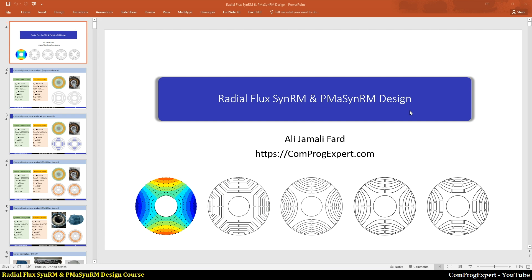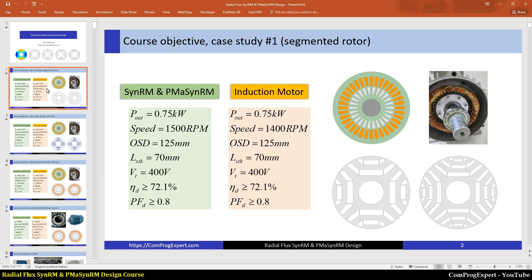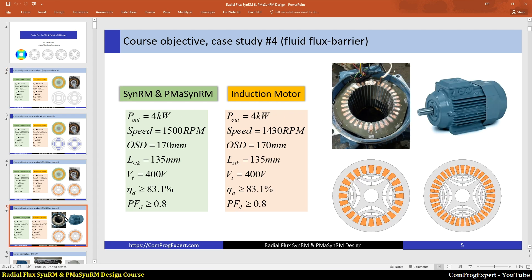In this video, we will review the course objectives. In this course, we will consider two benchmark induction motors of different ratings. The first one is from Siemens and the output power is 0.75 kilowatt. The next one is a four kilowatt motor from ABB.